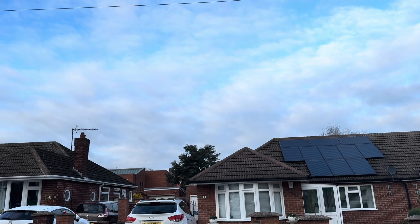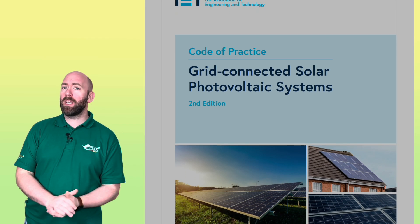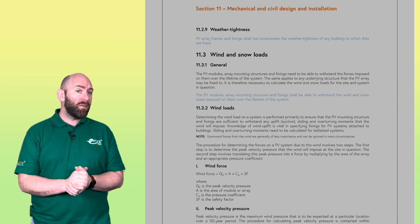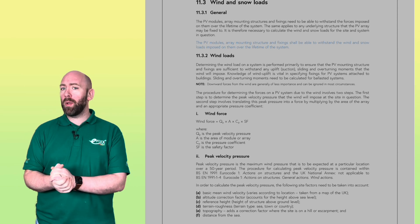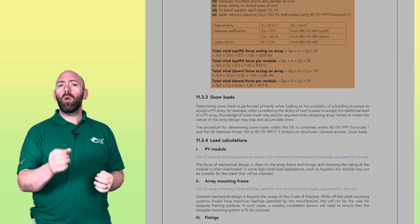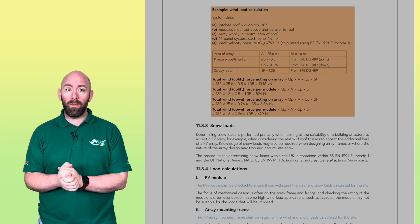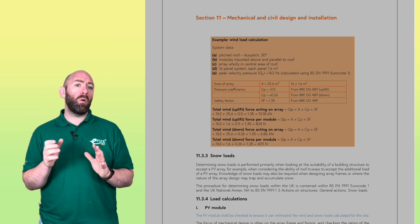With roof-mounted systems we do need to consider the wind and additional loads to the roof. Section 11.3 of the IET Code of Practice for Grid Connected Solar Photovoltaic Systems gives guidance on this and some example wind load calculations. We also need to consider the additional weight added to the roof, including if snow was to be on the panels. You may even need to obtain a structural survey, but this falls outside the scope of this CPD.